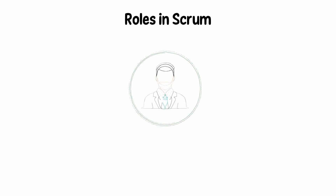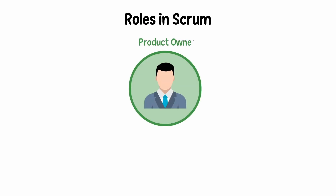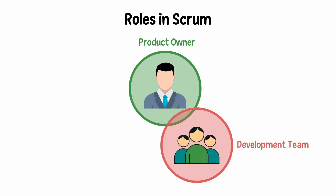Roles in Scrum. The Product Owner has complete responsibility and ownership of defining and prioritizing user requirements. The Development Team is a group of people who collaborate to create and deliver the requested and committed product increments, made up of cross-functional members who are capable of meeting the sprint objectives.